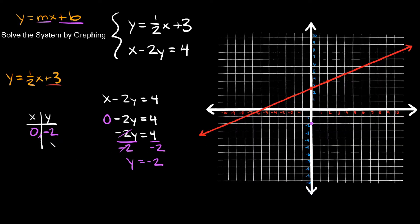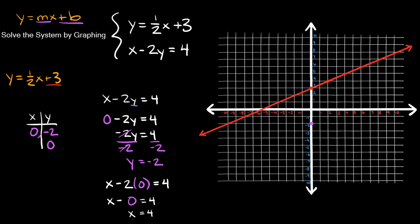Now plug in y equals 0: x minus 2 times 0 equals 4, so x minus 0 equals 4, meaning x equals 4. That gives us the point (4, 0). With these two points plotted, draw a straight line for the second equation.